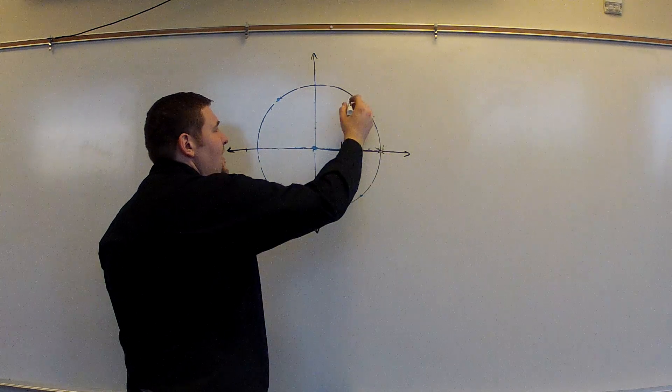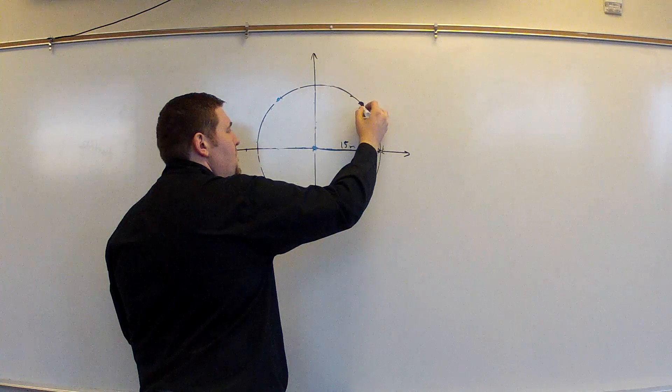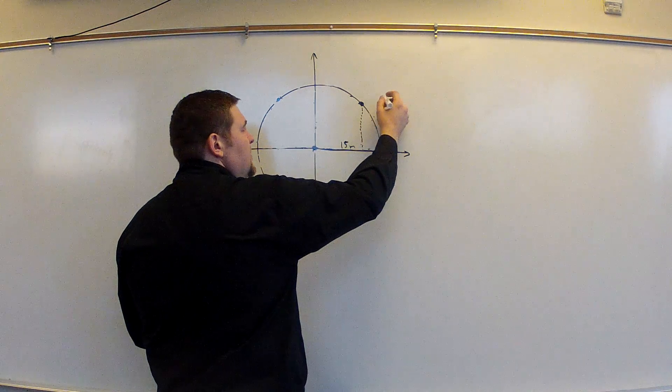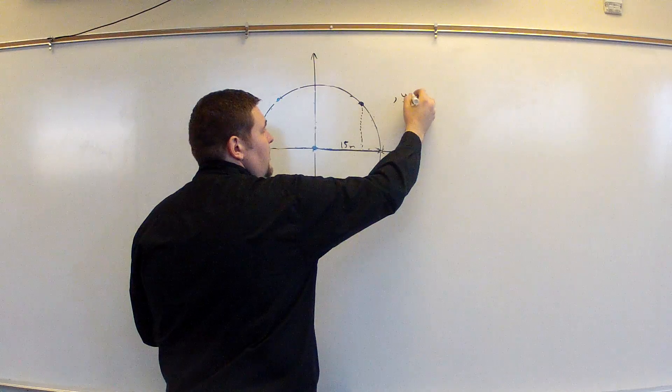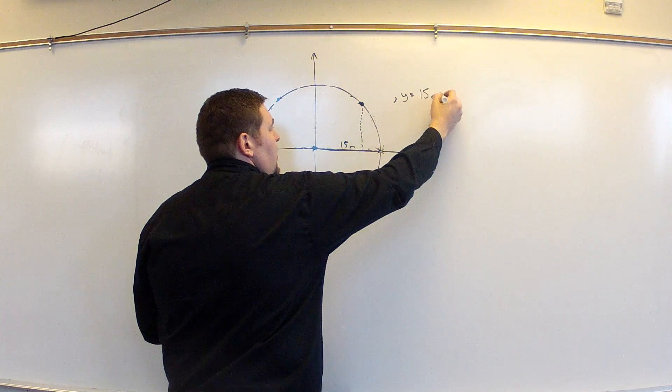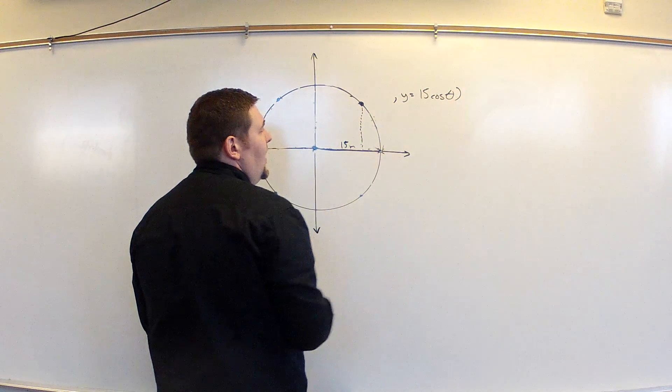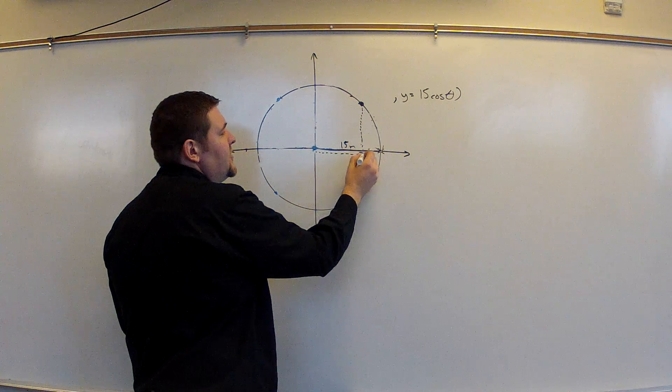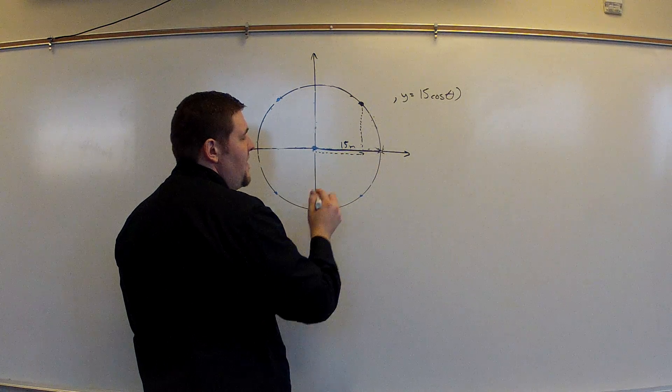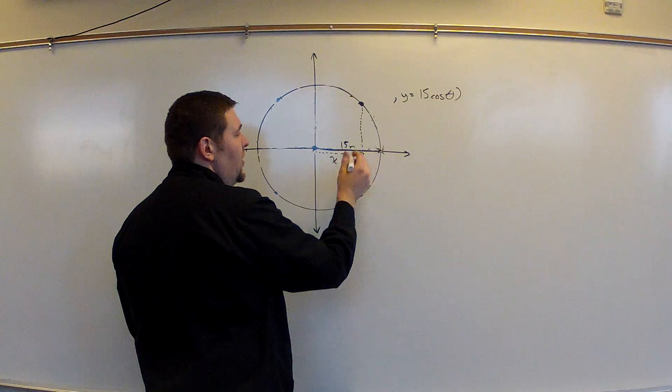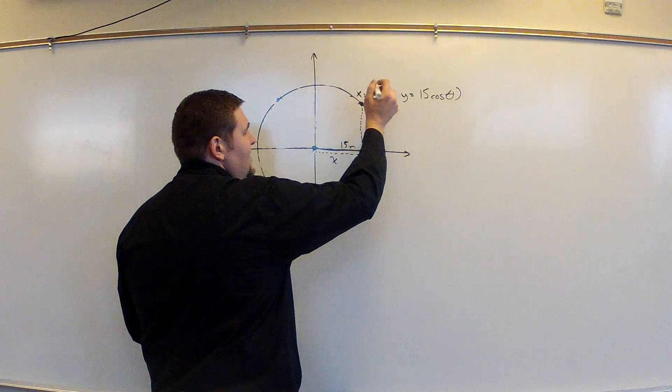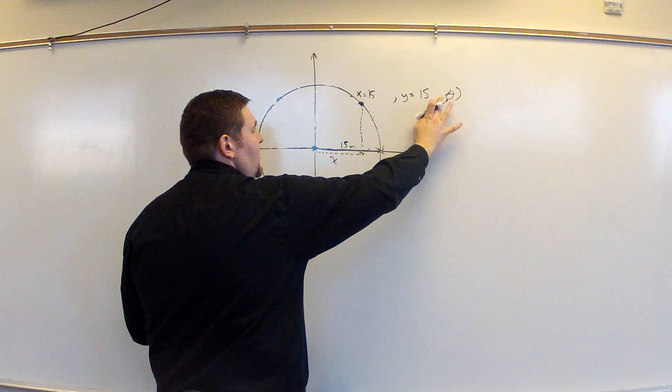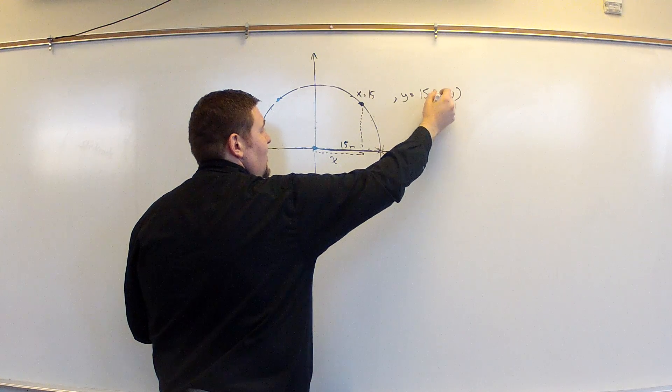If I was interested then in how high I was going above the midline, I could then calculate that using something for y. Y is equivalent to 15 cosine of theta. But in addition, maybe I want to know how far out I am from the center of the ferris wheel. If I want to know that, that's a horizontal component, or your x component, and that would be that x is equal to 15... Whoops, I put down here sine. The vertical part is sine, by the way, not cosine.